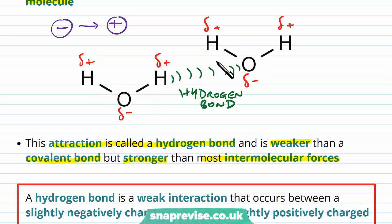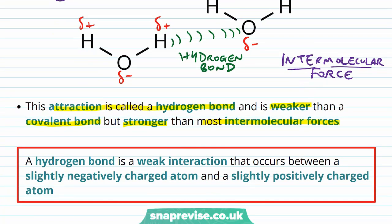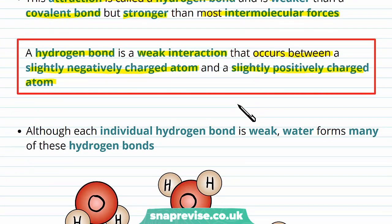Between molecules, we have what we call intermolecular forces, because it means between molecules. There's lots of different types of these, and you don't need to worry about the others for now. But a hydrogen bond is probably the strongest of these intermolecular forces. But compared to a covalent bond, it's weak. A hydrogen bond is a weak interaction occurring between a slightly negative charged atom and a slightly positively charged atom. So it's talking about polar molecules.